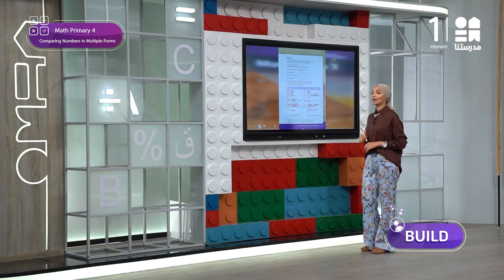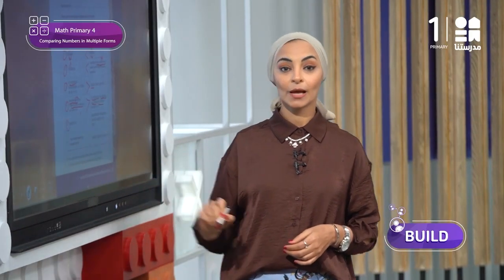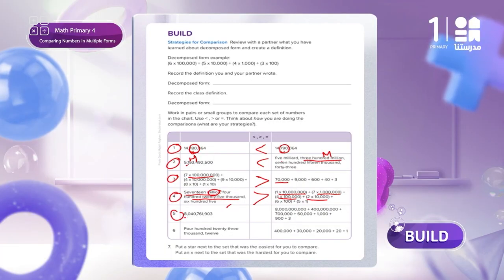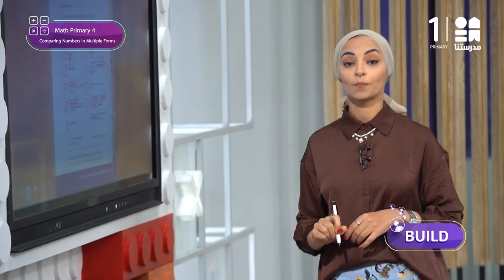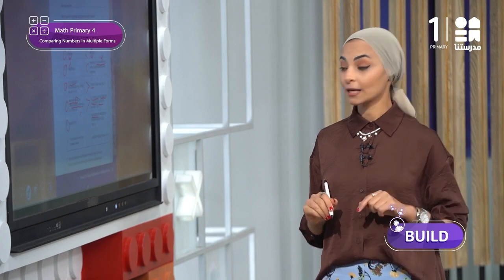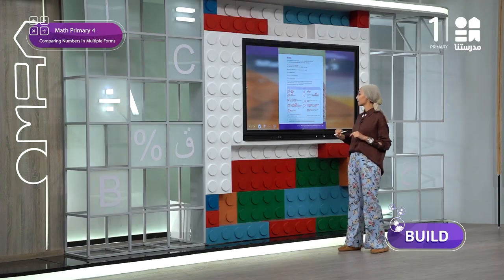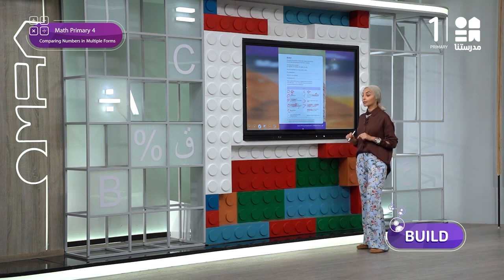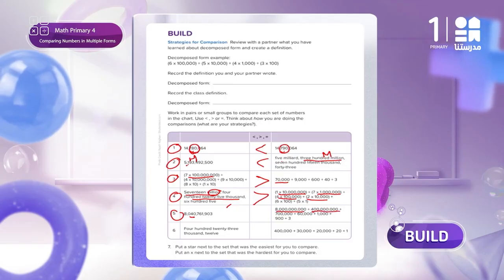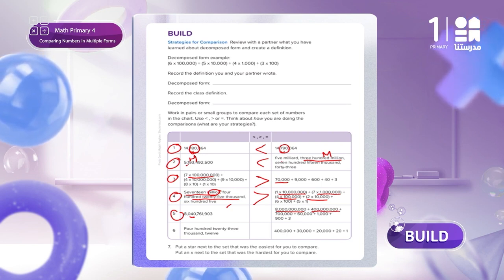I hope you understand it very well. Now, what about question 5? We noted that the billions are equal in both numbers — 8 billions in both. So let's look at the millions. The first number has 40 million. What about the second number? The second number has 400 million. Of course, 400 million is greater than 40 million. So the second number is greater than the first number.